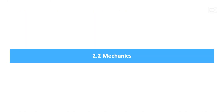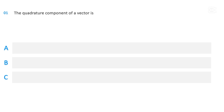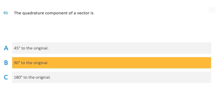Subsection 2.2, Mechanics. The quadrature component of a vector is: 45 degrees to the original; 90 degrees to the original; or 180 degrees to the original. The correct answer is 90 degrees to the original.